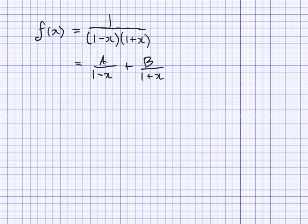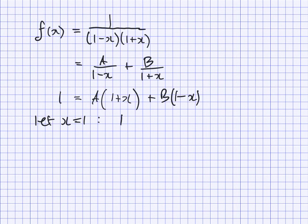Therefore, we know that 1 is equal to A times 1 plus x plus B times 1 minus x. We want to make one of the brackets equal 0, so let x equal 1. That would give us 1 equals 2A, and so A equals 1 half.